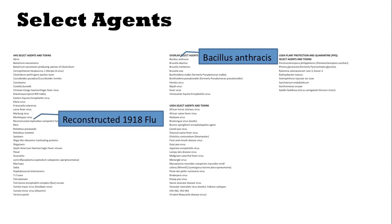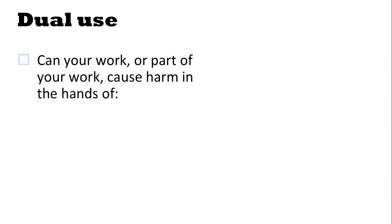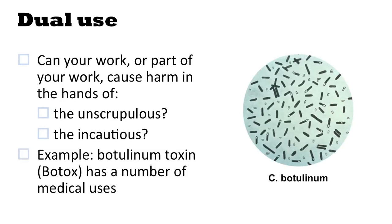Let's take a closer look at botulinum neurotoxin. Why would we be particularly interested in this? Because of its potential for what we call dual use. When considering questions of dual use, you must ask yourself: can your work, or part of your work, cause harm in the hands of the unscrupulous or the incautious? For example, if you were interested in producing botulinum toxin, or Botox, in bacteria — it has a number of medical uses, and that's the purpose of your work — however, the information and physical product generated by your work could potentially cause harm in the hands of others.